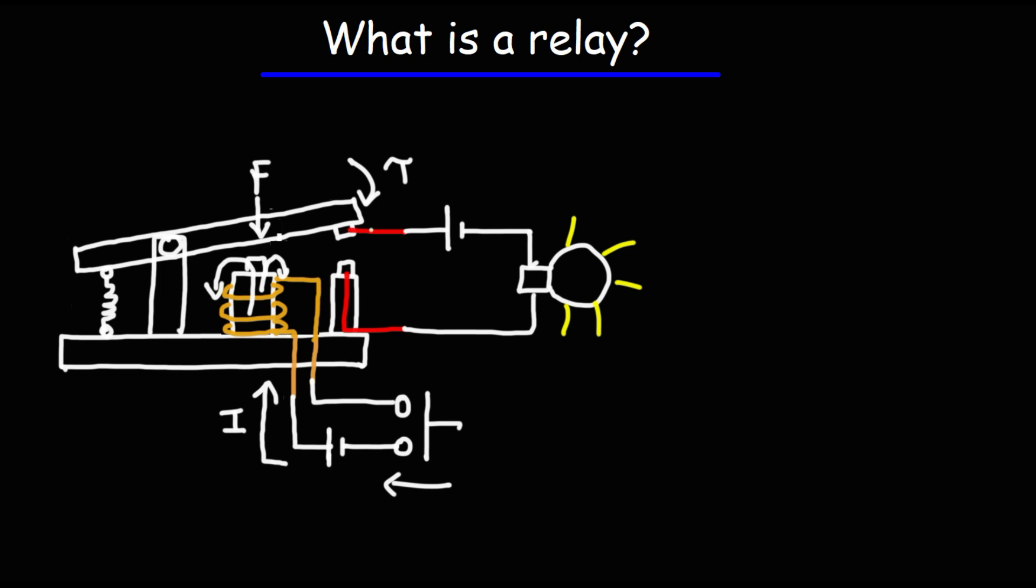That is going to basically connect these two metal contacts together, activating circuit two. So once this goes down, this goes down connecting these two parts, circuit two is activated, current is going to flow through it, lighting up the light bulb.